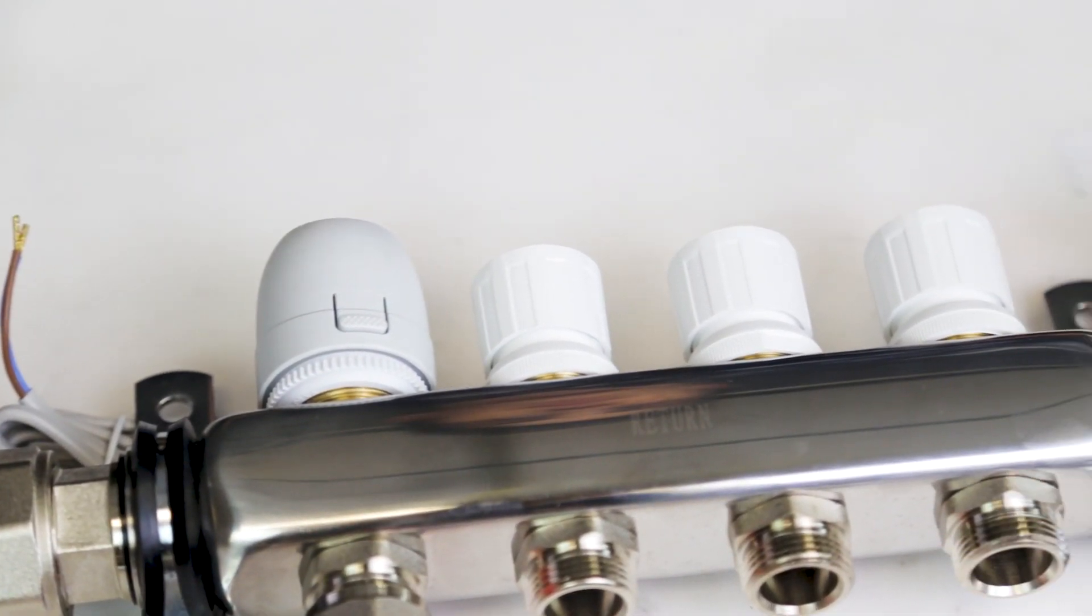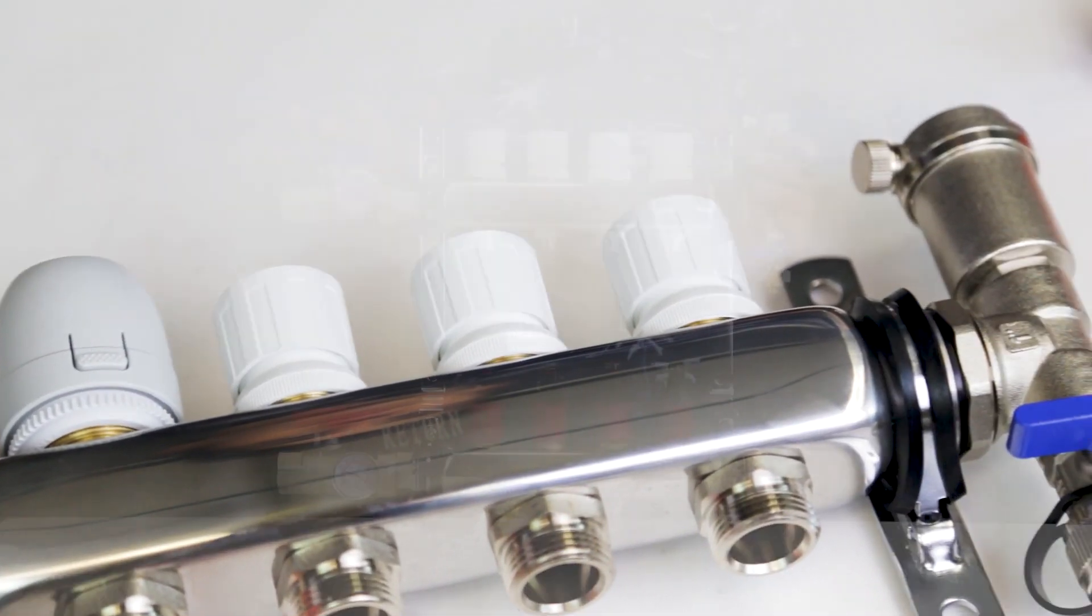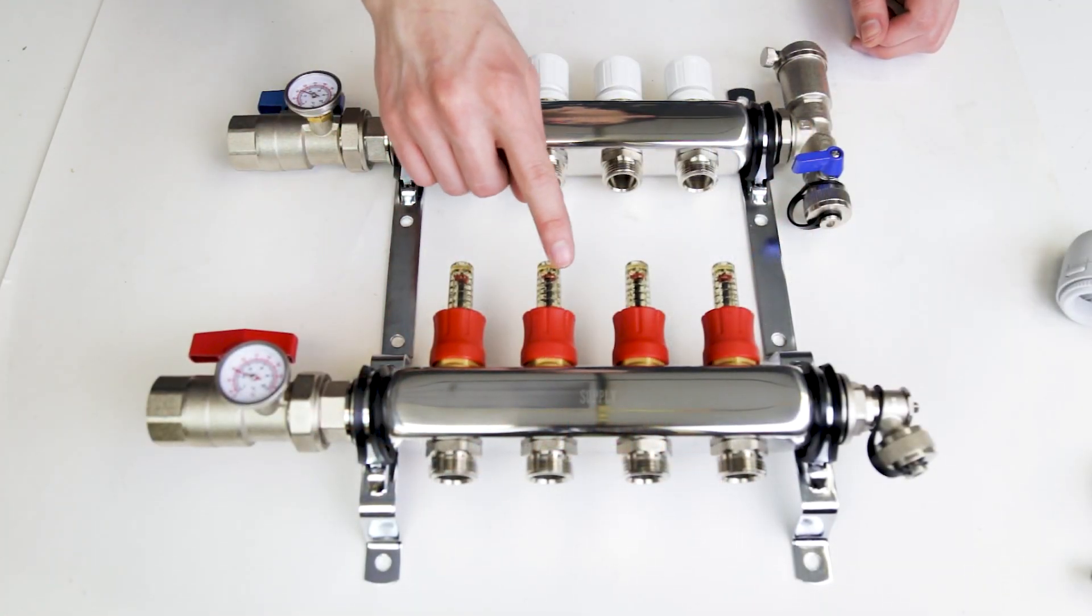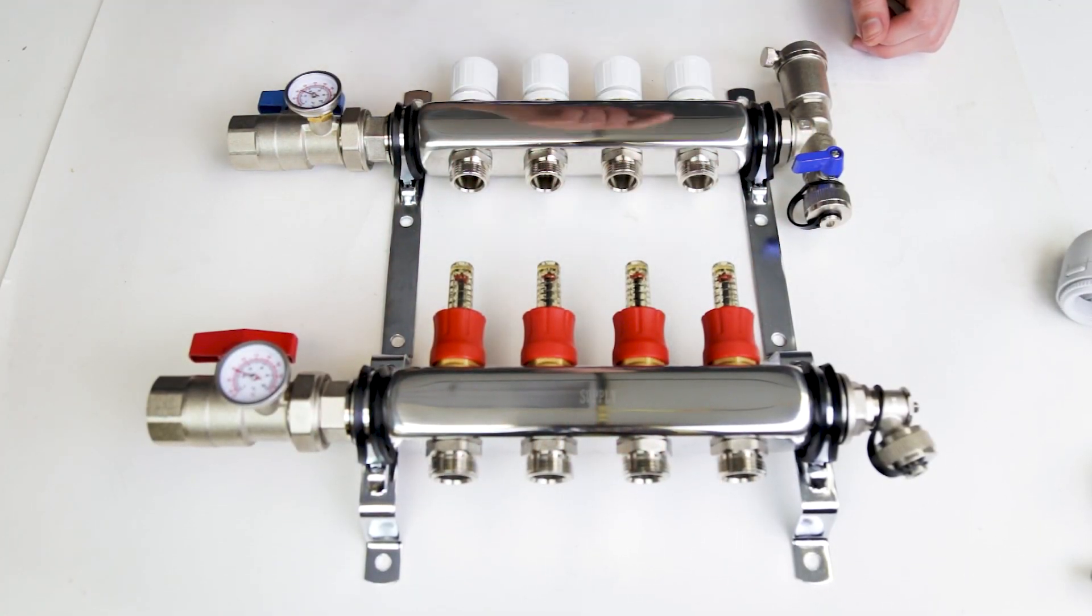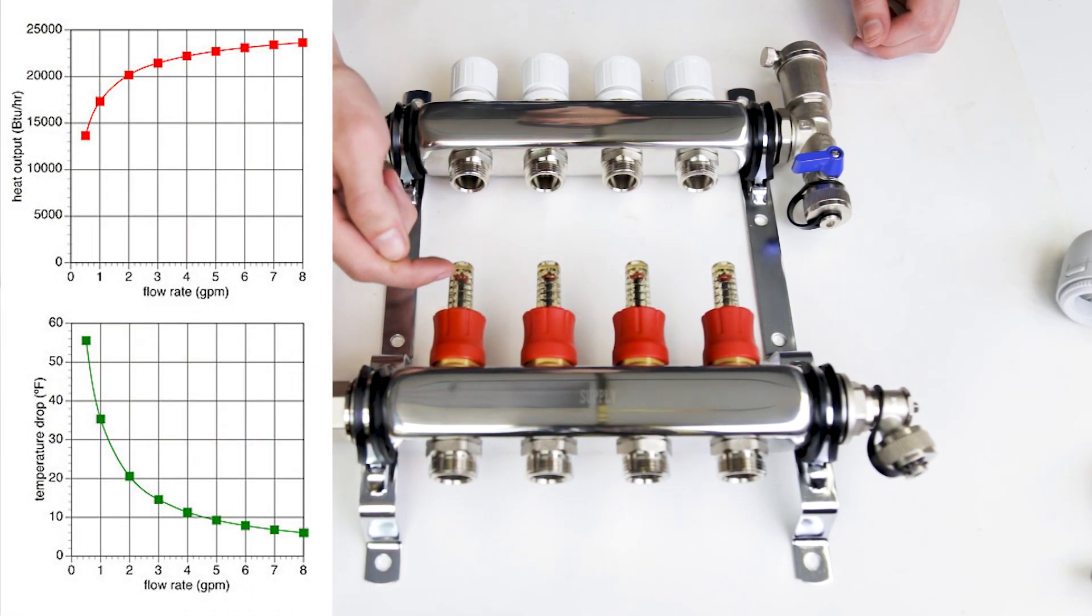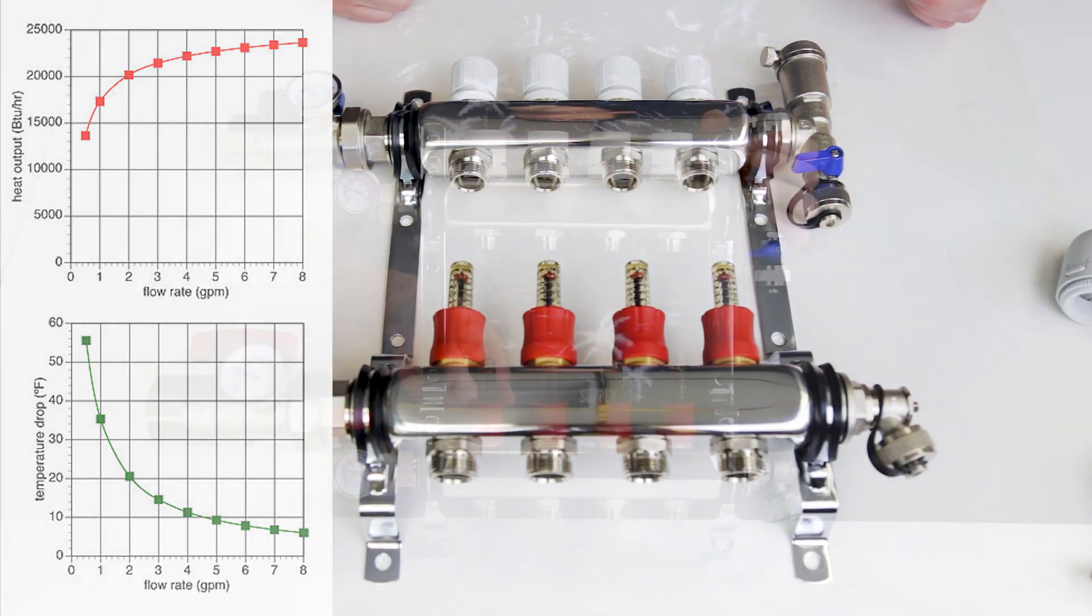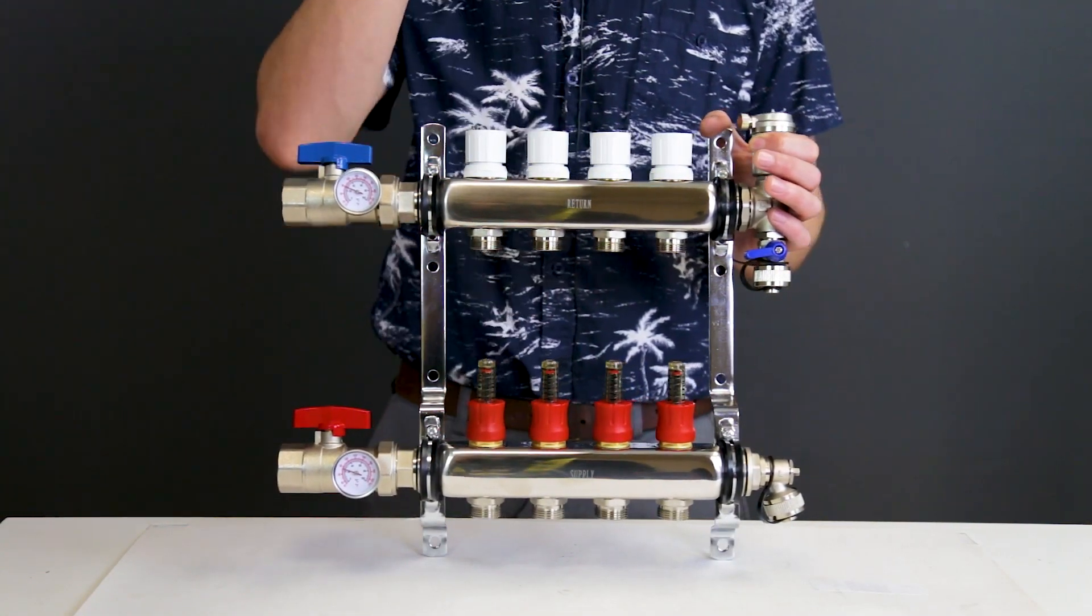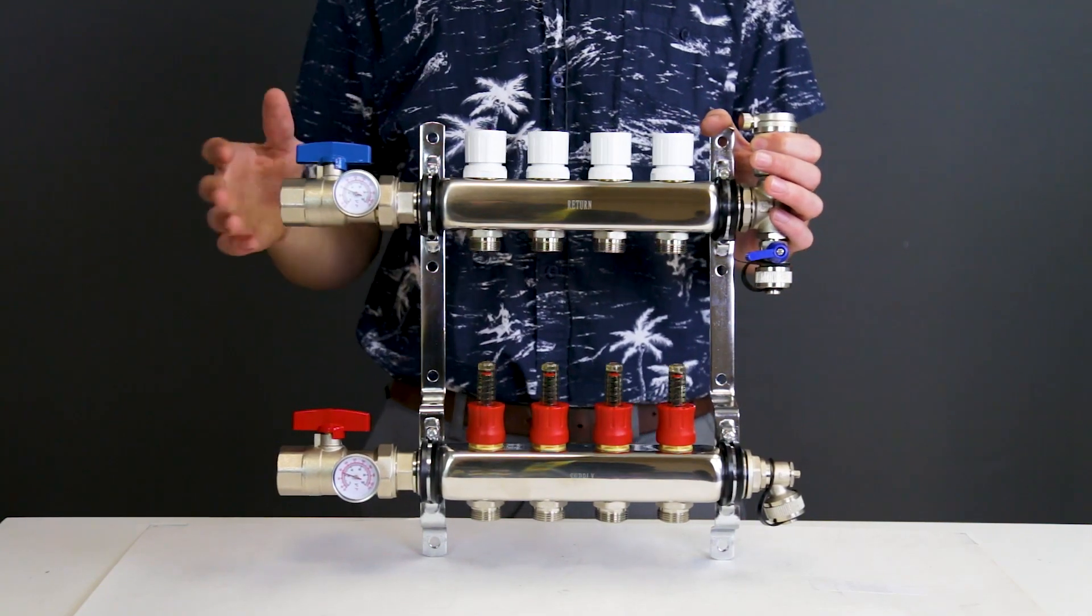The actuators allow the user to control each room or run of pipe temperatures individually. The flow indicators on the bottom of the manifold give a visual gauge as to how much water is flowing through each circuit. The amount of flow needed depends on the length of the circuit and the amount of temperature drop needed. As a rule of thumb, the shorter the circuit, the more restriction that will be required. This is how you balance the system.